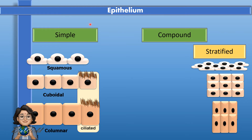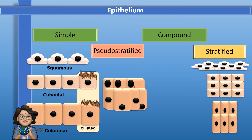Under the simple epithelial tissue, there is also a category called pseudo-stratified. The word pseudo means false, and stratified means multi-layered. So pseudo-stratified epithelial tissues are actually simple because they are made up of a single layer. However, under a microscope, they give an impression as if they were multi-layered, just because the nuclei are positioned quite randomly. For example, in this diagram, it can give an appearance that there are three layers of cells, although they are all positioned on the same basement membrane.